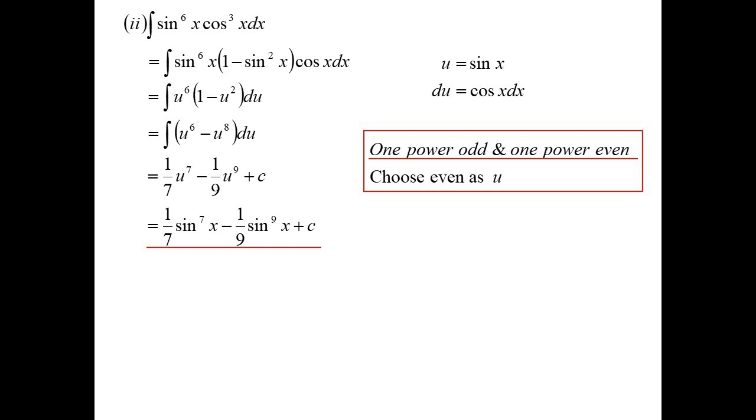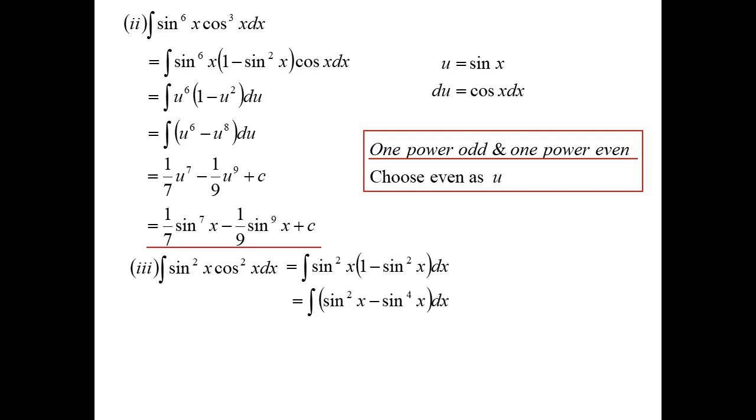Here's one where one's odd and one's even. In that case, the choice is simple — you always pull it out of the odd one. So I'll pull the cos out of the odd one. That means the cos squared I'm left with becomes 1 minus sine squared, I can do a substitution, and there's our final answer. So one odd, one even: it's the even one that's going to be u. You're getting the du from the odd one. Two even ones — sine squared, cos squared — I just change one of them to the other.